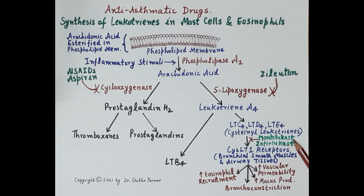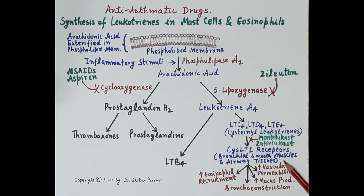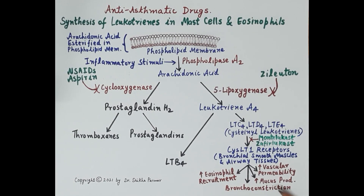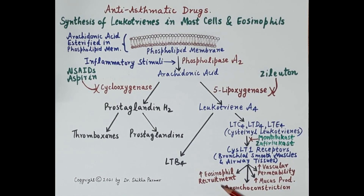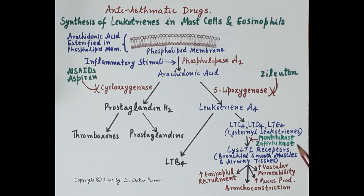These cysteinyl leukotrienes bind to cysteinyl leukotriene 1 receptors on the surface of bronchial smooth muscles and other tissues and cause bronchoconstriction — the cardinal symptom of asthma. These leukotrienes also increase production of mucus, increase vascular permeability, and increase recruitment of eosinophils, which further enhances the inflammation.